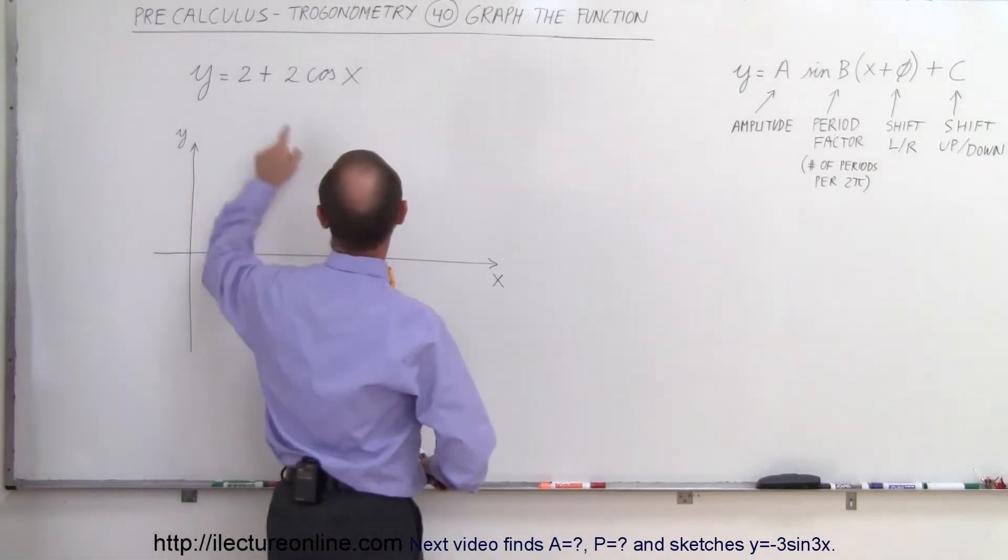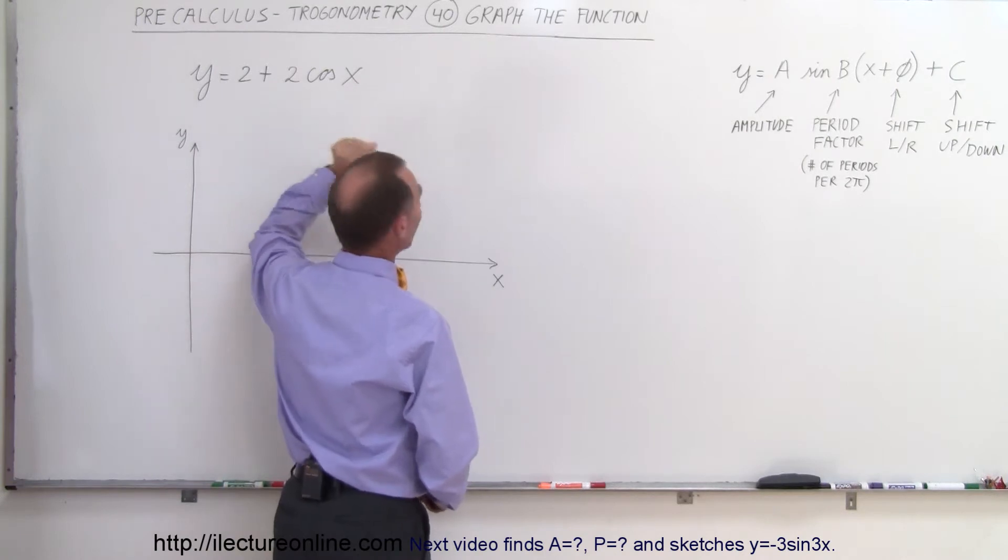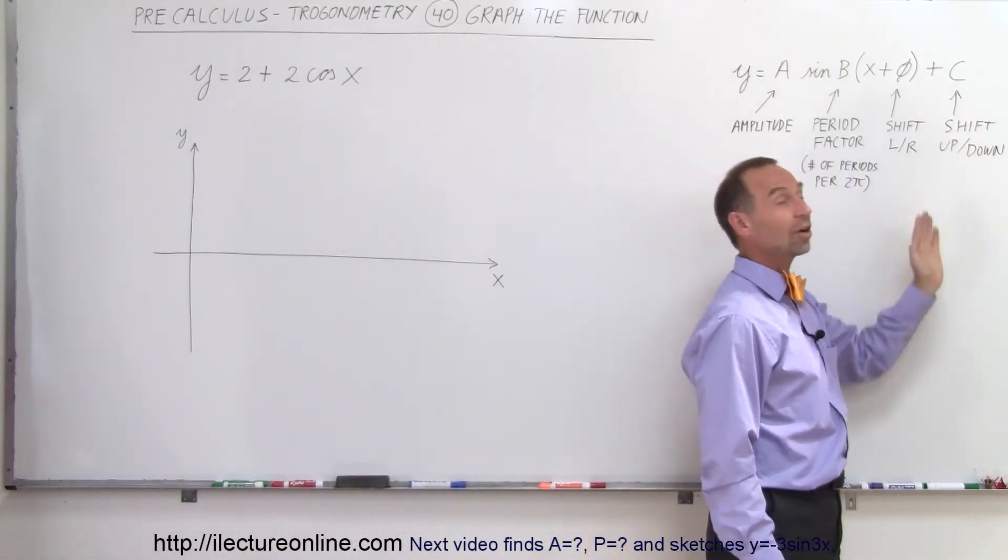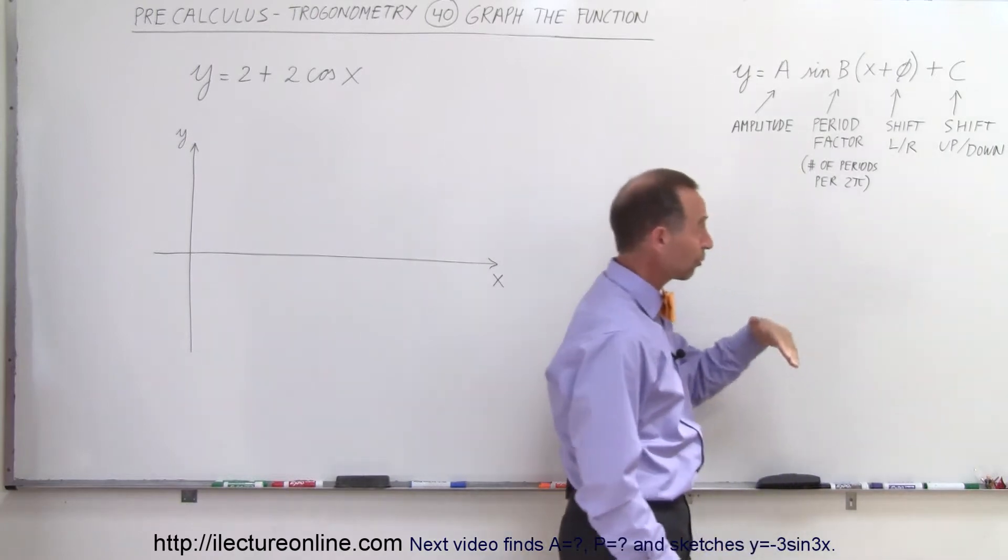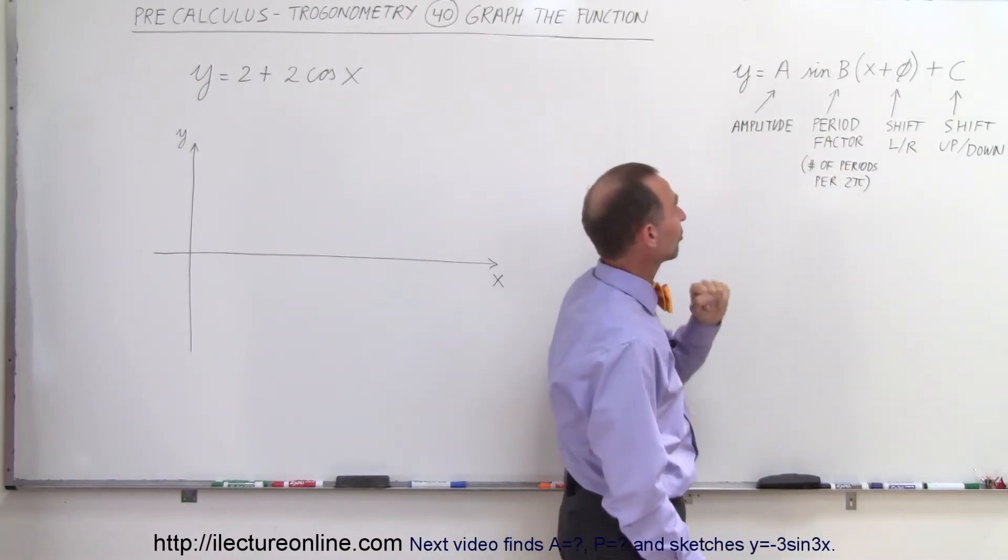Notice that we have 2 added to 2 times the cosine of X, so that's like the plus C which causes the shift up or down. Plus of course makes it shift up, negative makes it shift down.